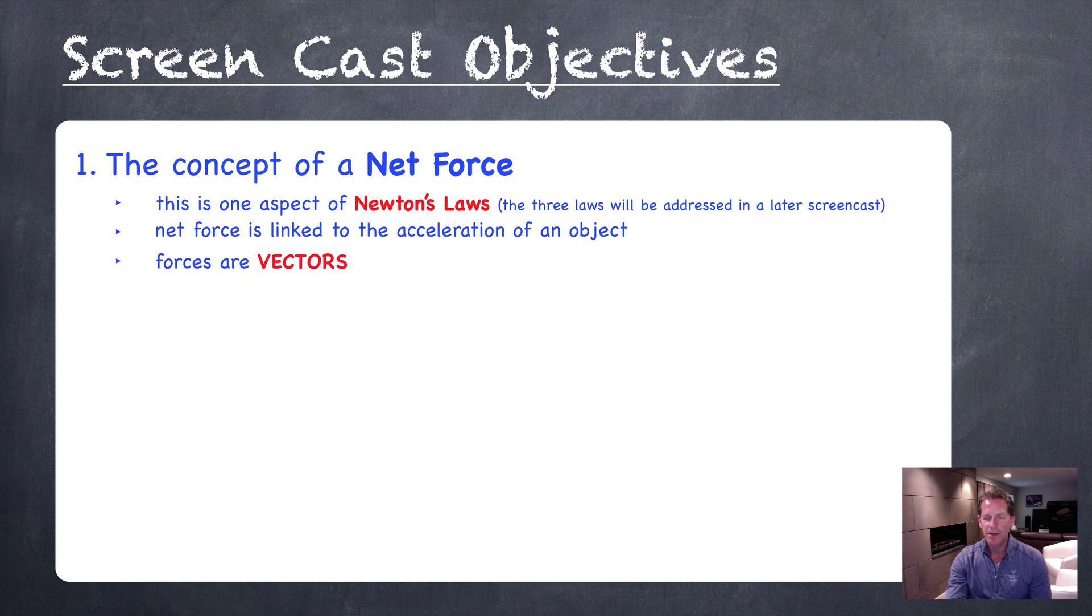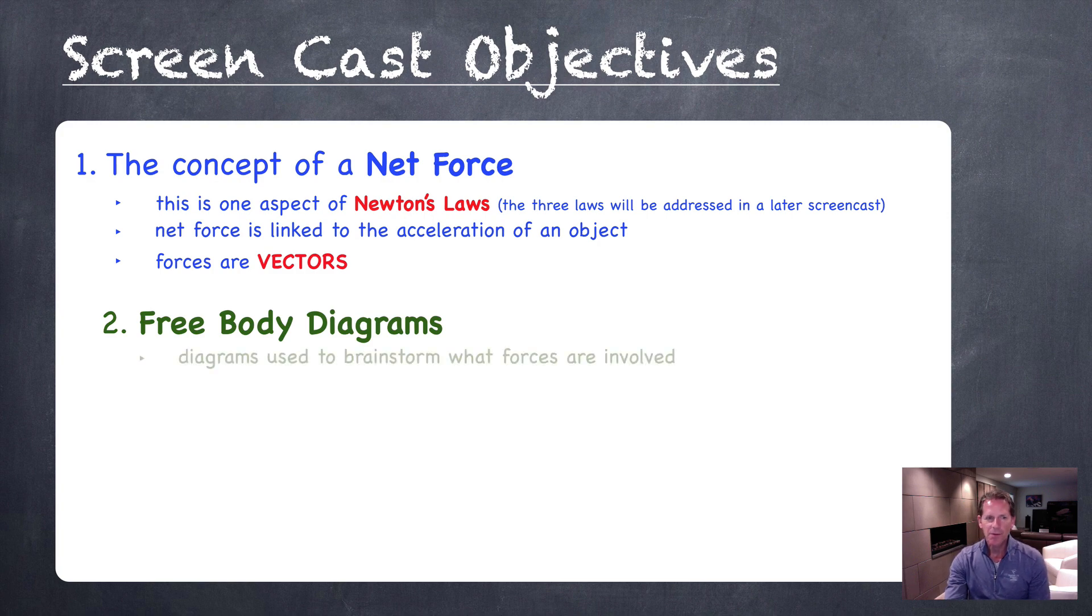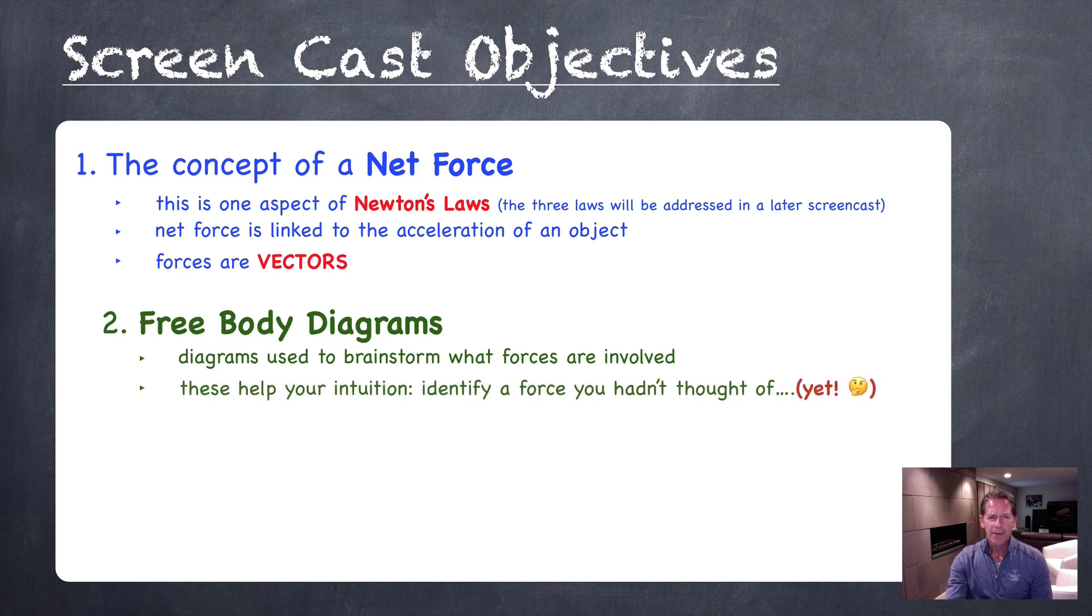Because we're using forces, it's important to remember that forces are vectors, so the direction that a force is acting makes a very big difference in the outcome. Free body diagrams, the second objective for our screencast today, are pictures or diagrams that an engineer or a physicist would use to try to interpret what's going on in a situation. Can help us brainstorm what forces might be involved, maybe there's one we hadn't thought of before, and they inform our intuition.